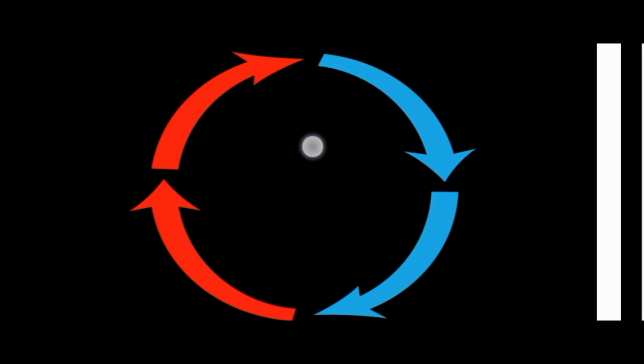As you can see this is a diagram of a convection current. These are the warm air which are rising and these are the cool air which are sinking. Warm air rises because it is less dense and lighter. But cold air is dense and it has a higher weight than the warm air.